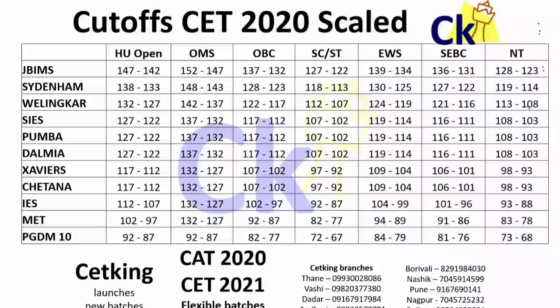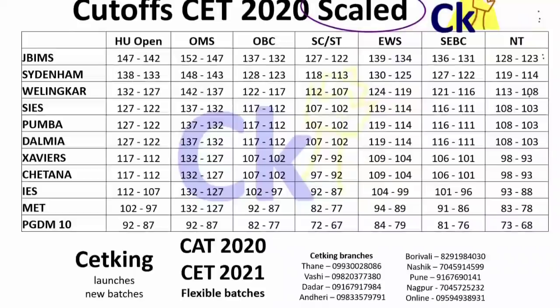Now, do cheezein dikhne ke liye - we have a scale score and we have the raw score. DTE hamesha scale karke deti hai; aapke admit card ke ooper bhi likha hoga ki is bar bhi score scale karke aayega. Toh joh final list aayegi usme aapko cutoff aisa dikhaiga - cutoff 147 to 142. Yeh hamaara final cutoff sheet hai.